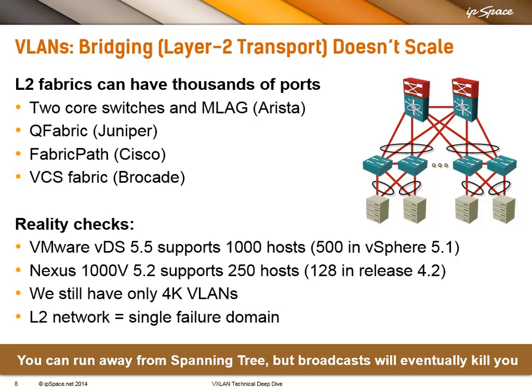If we stay on the VLAN side for just another minute so you can see the difference between the two: if you want to build a large-scale cloud or server virtualization infrastructure using VLANs to implement virtual segments, you obviously need large layer 2 fabrics. Every single vendor can build you a fabric with thousands of ports. Arista uses two core switches and MLAG; Juniper has their QFabric; Cisco has FabricPath; Brocade has VCS Fabric; HP supports both Trill and SPB; Avaya has SPB.